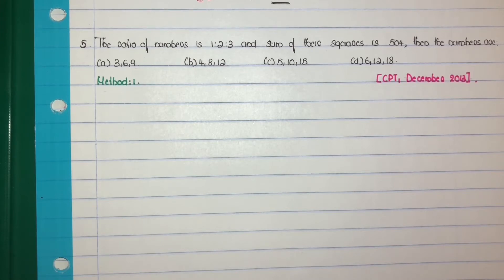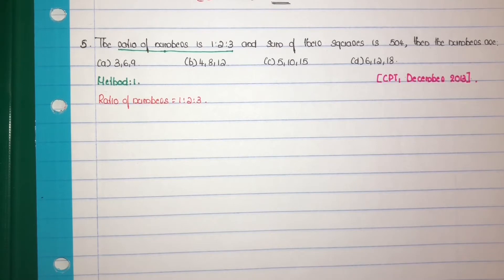The ratio of numbers is 1 is to 2 is to 3. The original numbers are the ratio into some common factor. Let the common factor be x. Then the original numbers be 1x, 2x and 3x. That is ratio into a common factor.